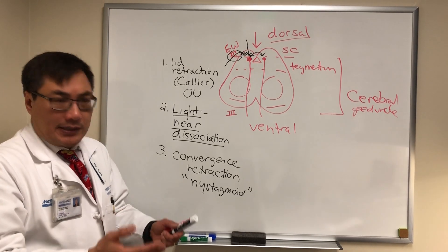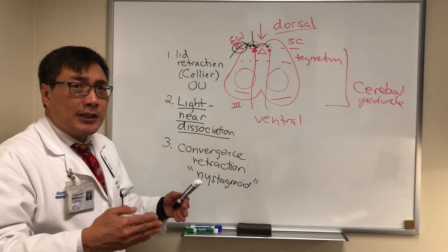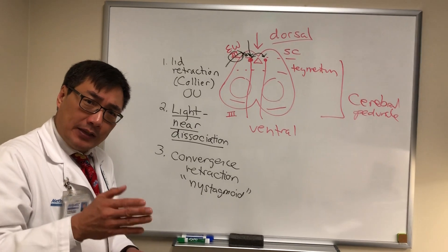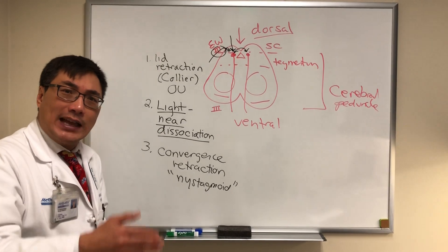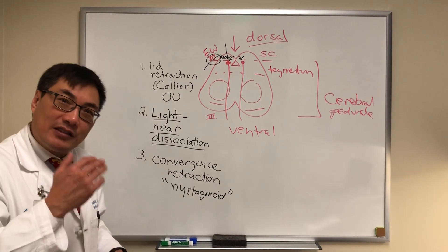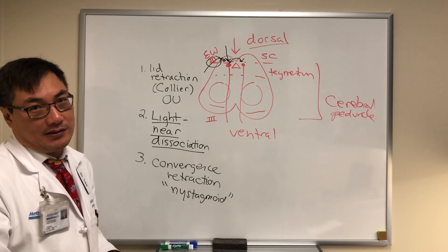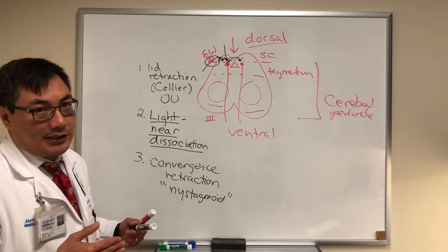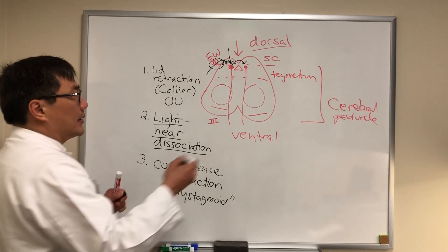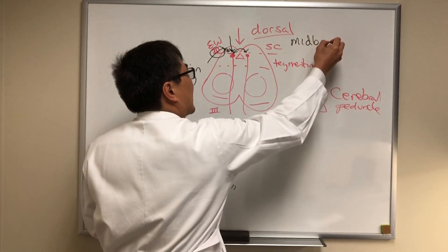Convergence retraction nystagmus is often apparent in attempted up gaze. The reason it converges is because the medial rectus is unopposed — the lateral rectus is innervated by the sixth nerve, which lives in the pons, and this is a midbrain problem. The third nerve is midbrain, the sixth is in the pons. So convergence retraction nystagmus occurs from dorsal midbrain lesions.